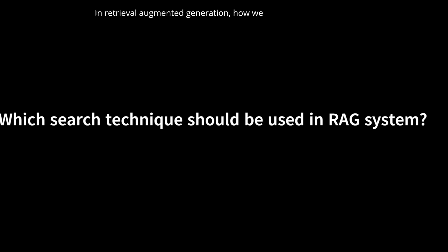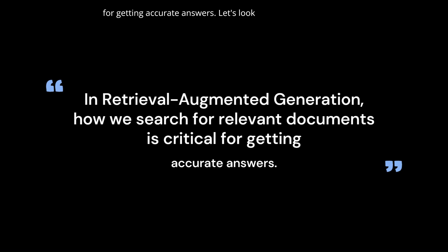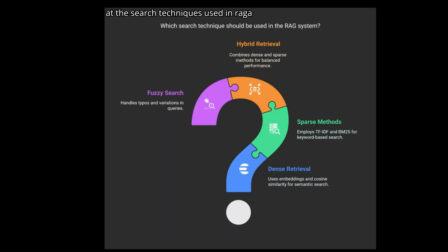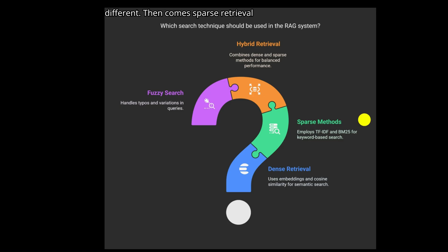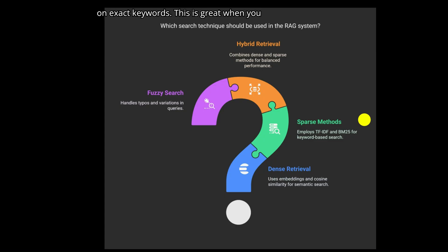The next question is: which search technique should be used in a RAG system? In retrieval augmented generation, how we search for relevant documents is critical for getting accurate answers. First, we have dense retrieval. This uses embeddings — it turns text into numbers and finds similar meanings using cosine similarity. It's great at understanding context, even if the exact words are different. Then comes sparse retrieval, like TF-IDF and BM25. These are old-school but still useful — they match documents based on exact keywords, which is great when you need precision, like with code or legal text.